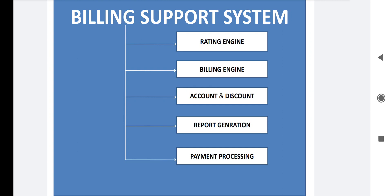The billing engine also handles different service-related charges, and considers the billing cycle — for example, a particular customer may pay a bill on the first date of the month. It determines the type of billing: whether it is postpaid billing, prepaid billing, interconnected billing, roaming charges, or convergent billing. All these tasks come under the billing engine. The generation of the invoice — meaning the bill containing all customer details — formatted as a PDF to be given to the customer — is also done by the billing engine.